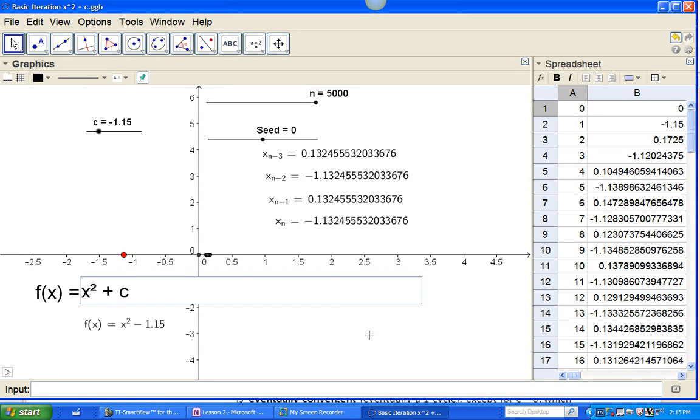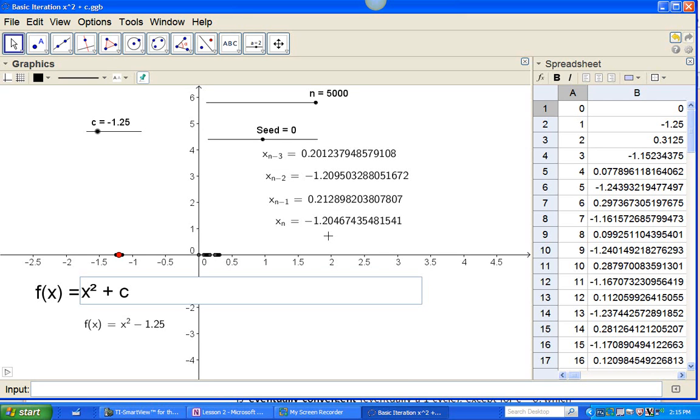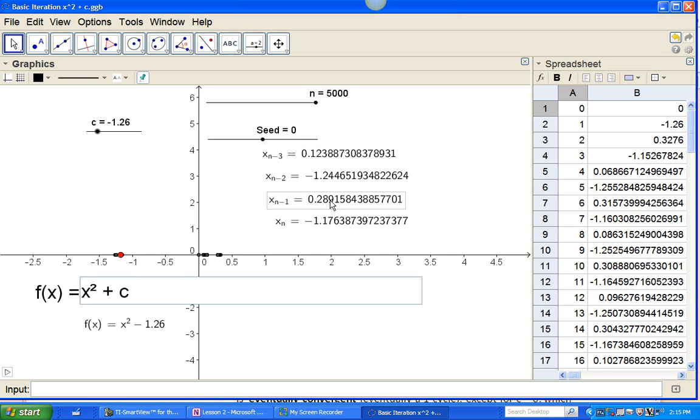And when we hit negative 1.24, we've still got an eventual 2 cycle. We'll see the 0.2 approximately there, the negative 1.2, the 0.2, the negative 1.2. Now let's go to negative 1.25. Okay, I've got the negative 1.2, 0.201, 0.212. That looks like it's still a 2 cycle. But look at this.